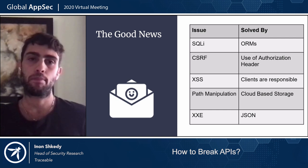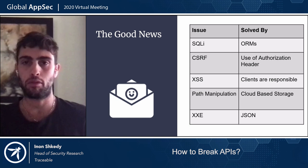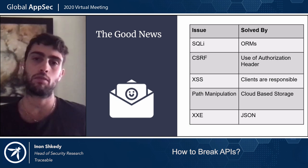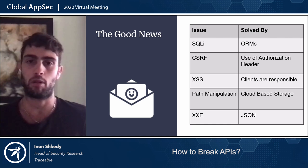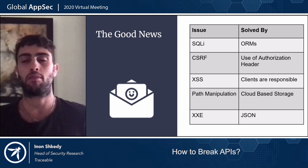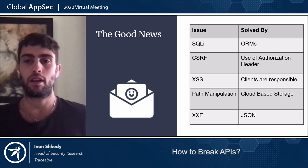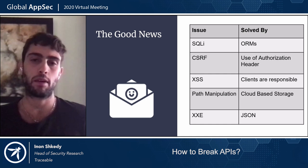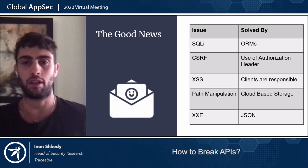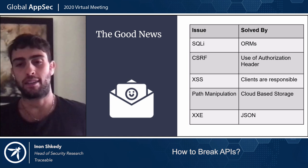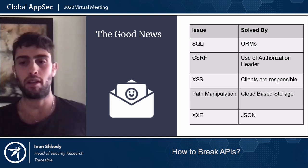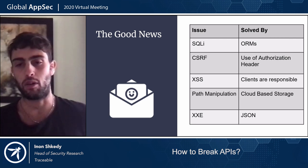In terms of application security, many traditional web application vulnerabilities are being solved today. SQL injections are largely solved by the use of ORM environments. CSRF is much less common because developers moved from cookies to authorization headers — if your authentication mechanism is not cookie-based, you're not vulnerable to CSRF by design. Cross-site scripting is now the responsibility of the client to protect against, since APIs return raw JSON, not HTML. XXE is less common because developers use JSON and don't parse XMLs.